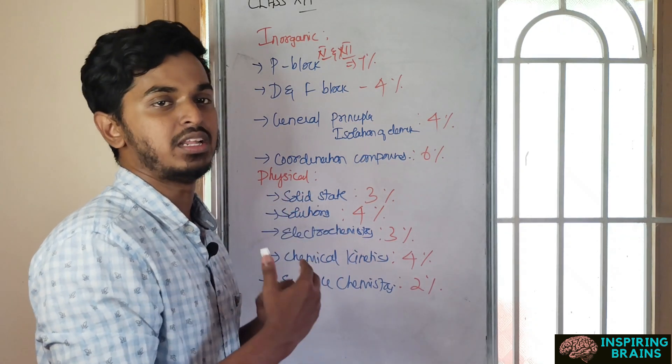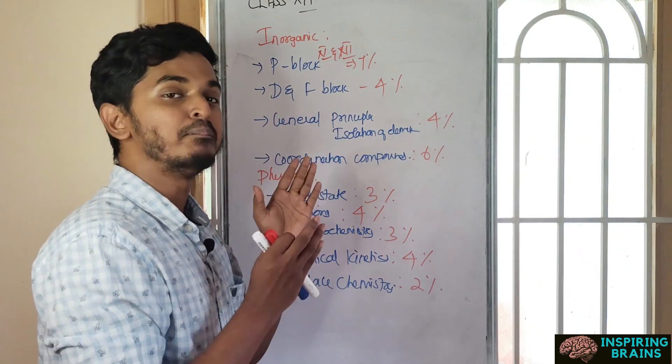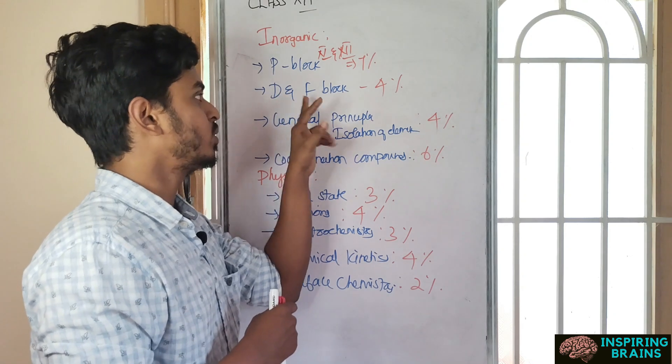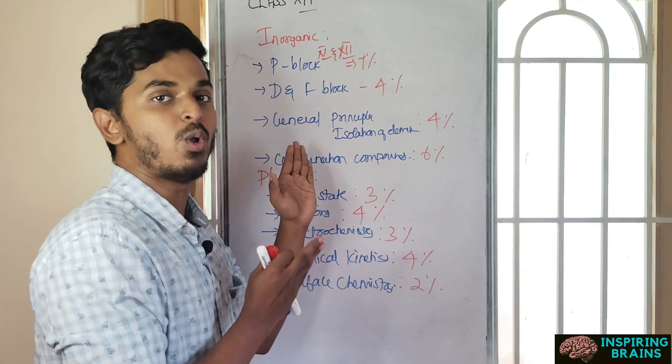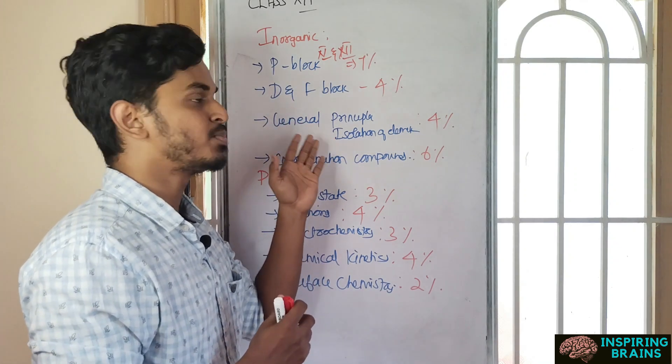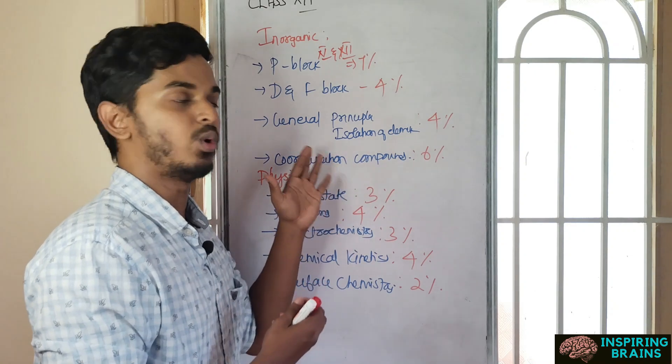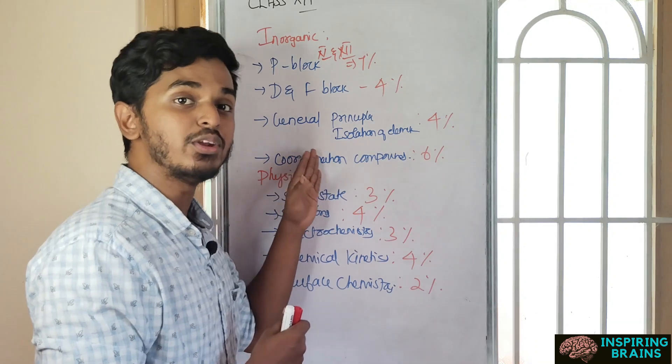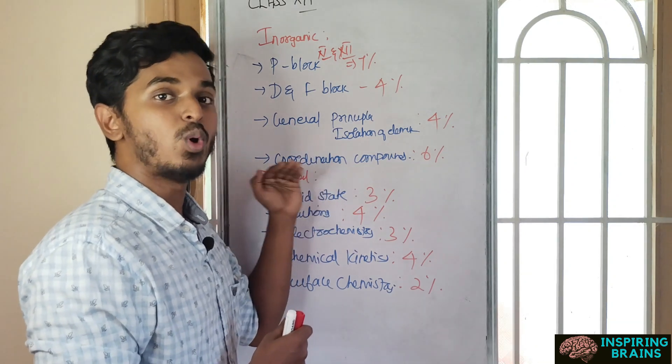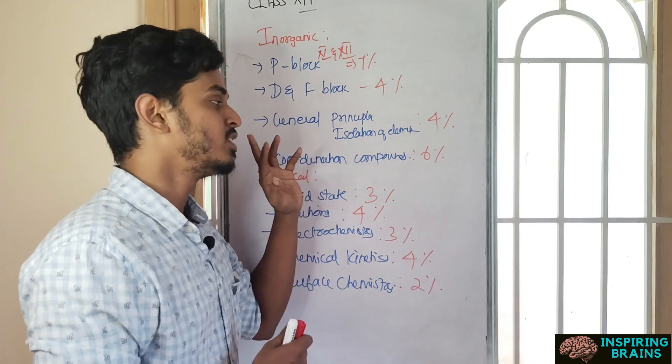You can arrange them in order of atomic radii or size. P block is quite a big unit. Then you can go with D and F, which is easier. General principle and isolation which is metallurgy unit - magnetic separation, ores, direct questions. Coordination compounds is a continuation of chemical bonding. It carries maximum so should not leave this unit.